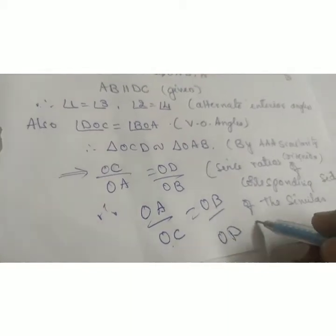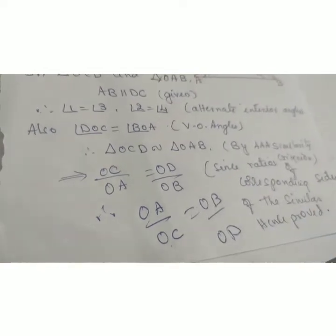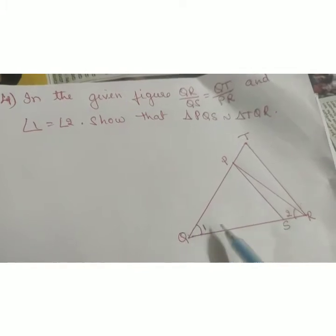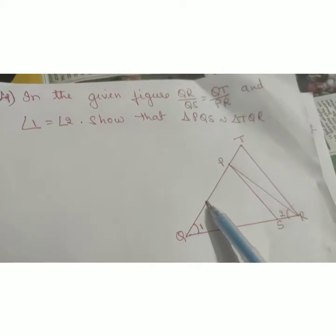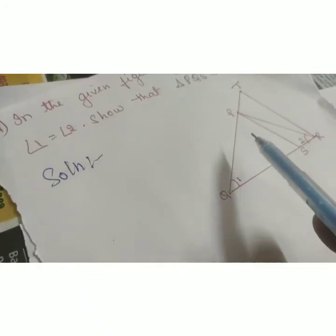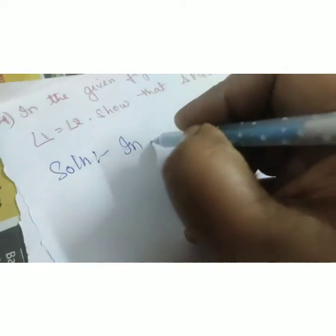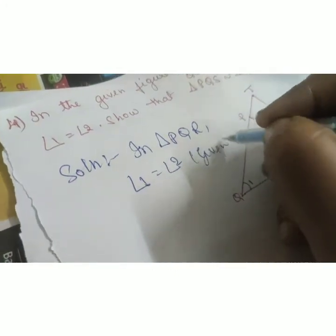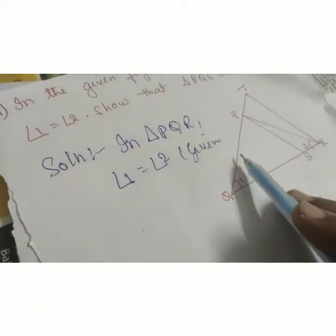Problem four: in the given figure, QR by QS equals QT by PR, and angle 1 equals angle 2. Show that triangle PQS is similar to triangle TQR. In triangle PQR, angle 1 equals angle 2 is given. Therefore it is an isosceles triangle, so QP equals PR.